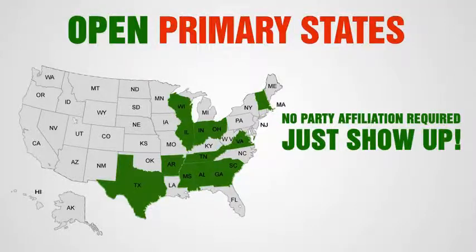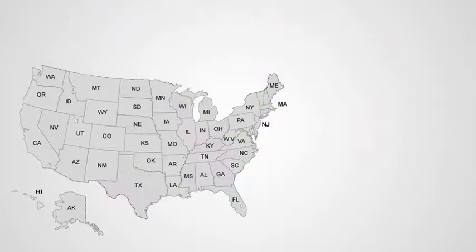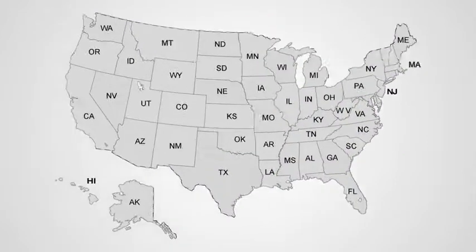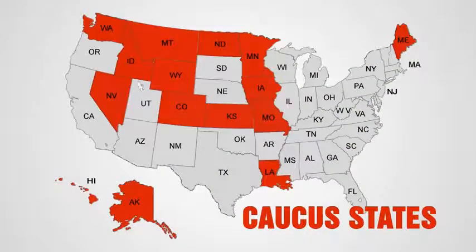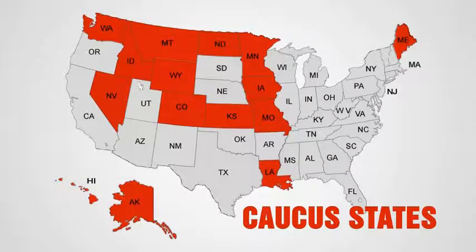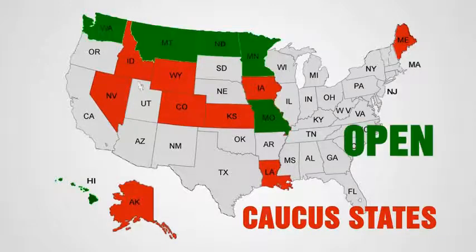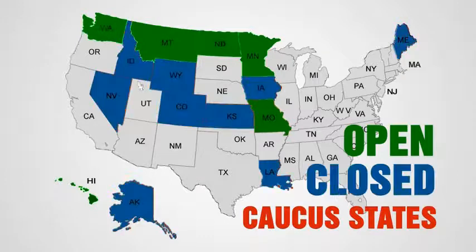In open or blanket primary states, just show up. Now let's look at the caucus states. Just as in a primary state, you must determine if the caucuses are open or closed. If closed, you must register Republican in time to be allowed to vote in the caucus.